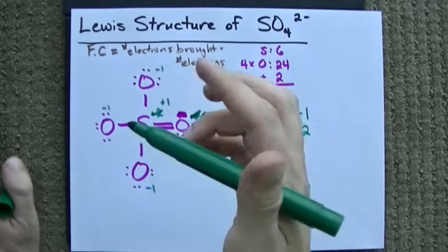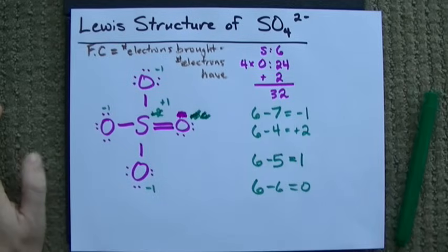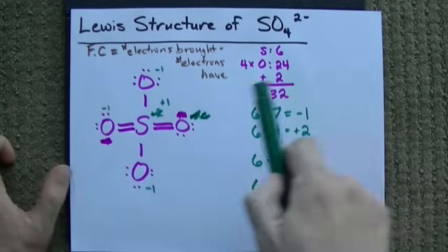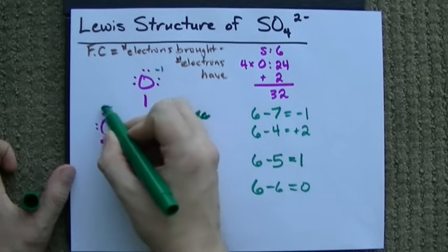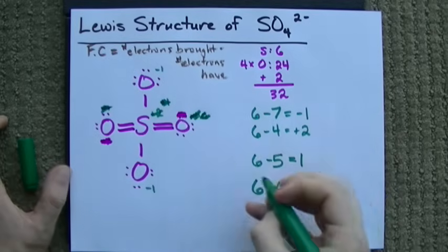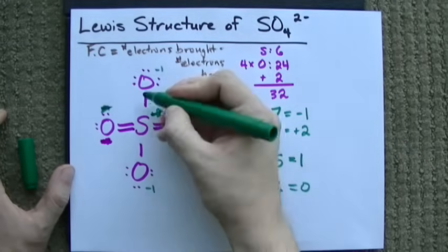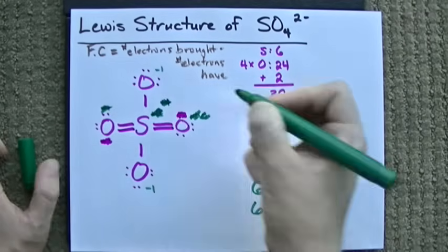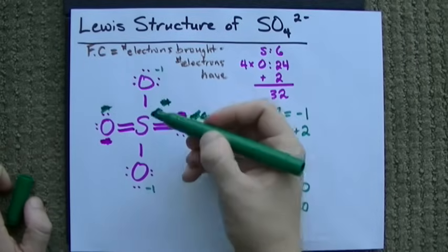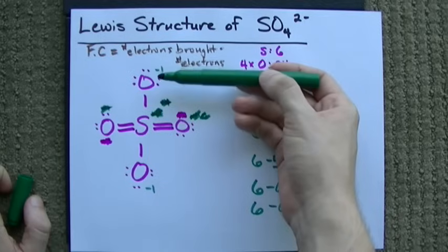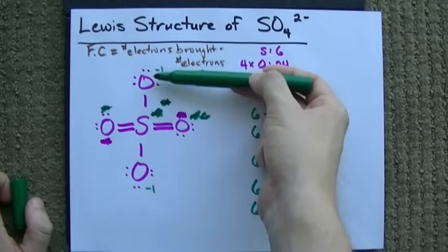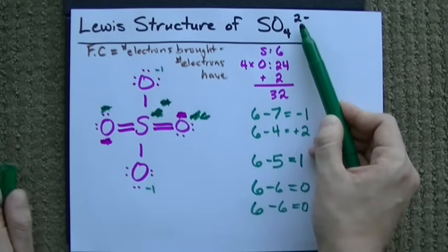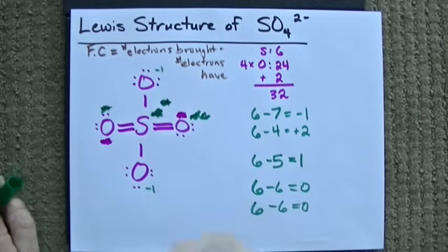Maybe we can minimize the formal charges a little bit more because we do still have a plus and a minus beside each other. If we take these two electrons and move them in. Now this oxygen looks like that oxygen, so it's going to have no formal charge. And the sulfur, which brought 6 electrons with it, now has 1, 2, 3, 4, 5, 6 electrons around it. And it has no formal charge either. Wow, this is way better. We used to have plus 2's and minus 1's. We're down to only having minus 1 charges on oxygens on either side of the molecule. You can probably guess that that's going to actually end up being the case because there is a minus 2 charge here anyways. And we've eliminated the formal charge in the sulfur in the center.